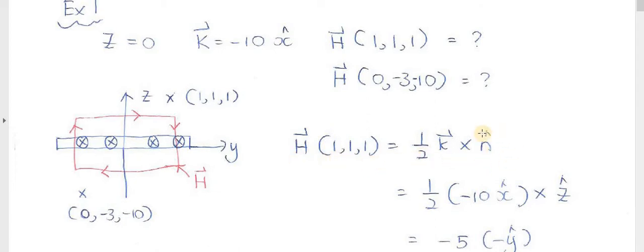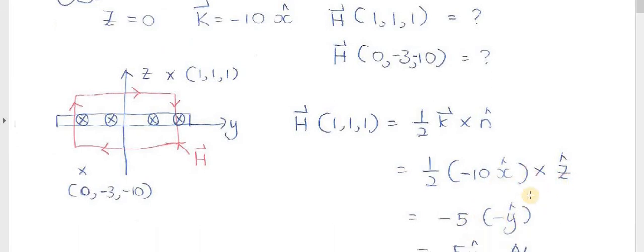So for this point, the vector n will be pointing upward, right, from the plane until here. Pointing upward, so it will be the direction z. So x cross z, you will get negative y, here you get negative 5.